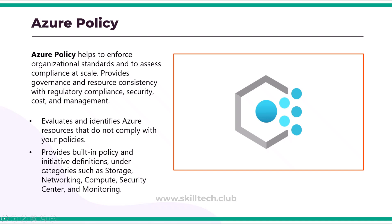Sometimes it's not about blocking a resource entirely — you may need to specify a proper configuration. For example, if you have a team of developers working on virtual machine deployments, you can ensure that staging and production environments use only a specific VM size, or restrict deployments to specific regions. Azure Policy lets you assign, customize, and group policies, then apply them to a subscription or resource group.